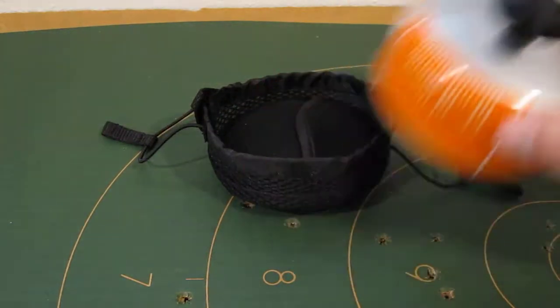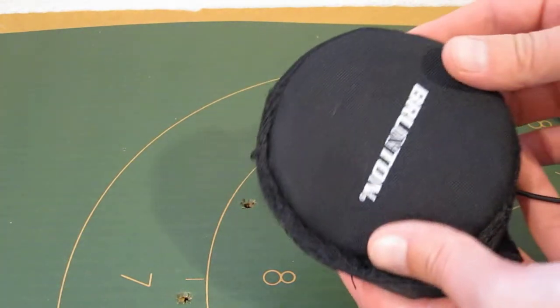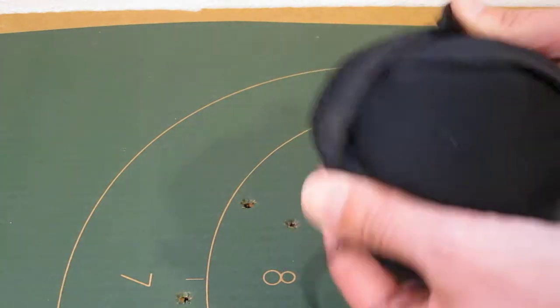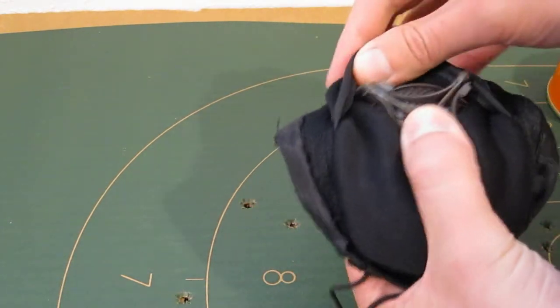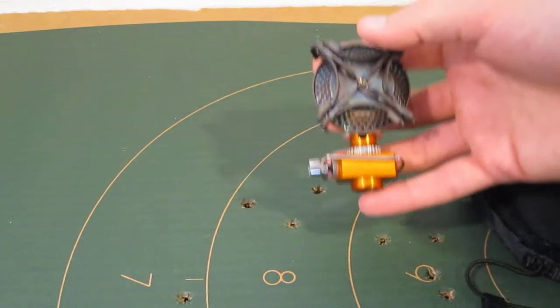So your fuel canister comes off, and then contained within this nice little pouch, you flip it around here, open it up, and there is your stove.